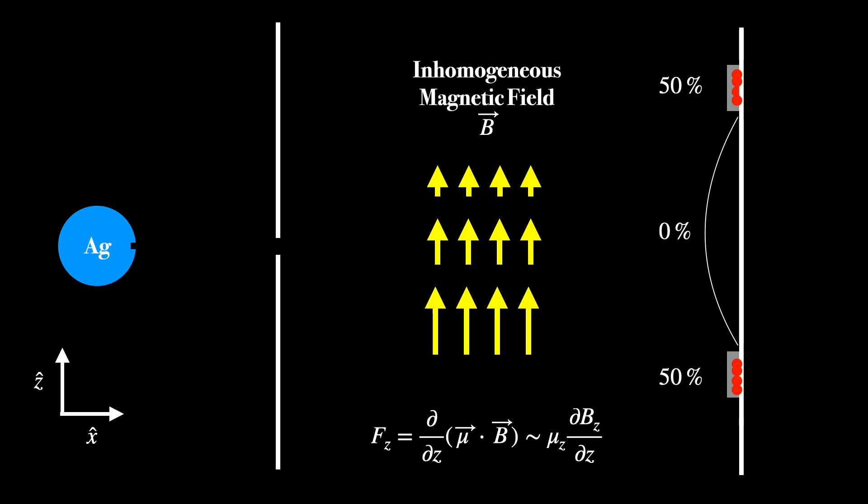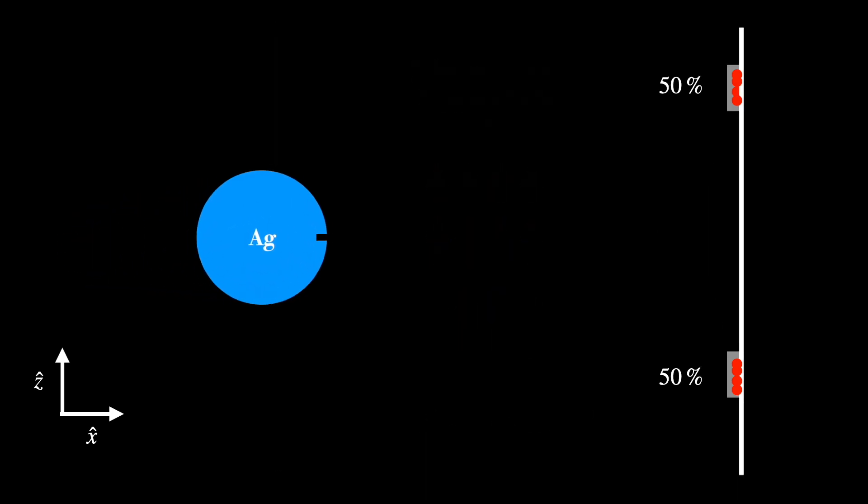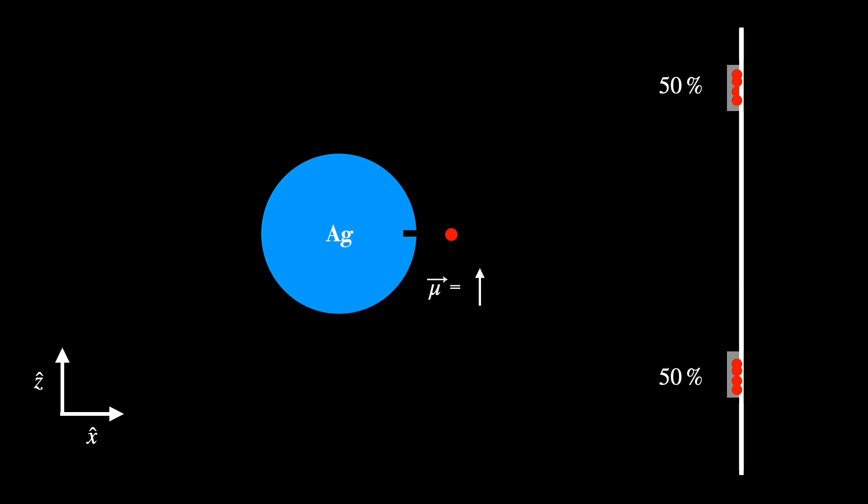It must be that the magnetic moments of the silver atoms in the oven only take on two values in the z direction. They are either z up or z down. And since this magnetic moment is caused by the spin or intrinsic angular momentum of the electron, this shows that angular momentum can only take on a discrete set of values. Or to use the more technical term, it is quantized.